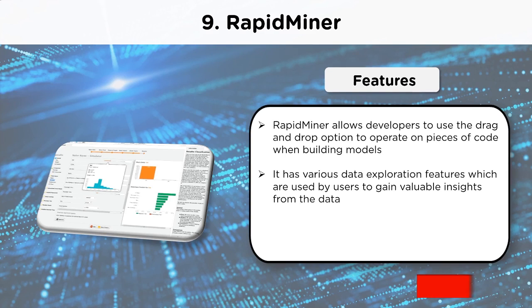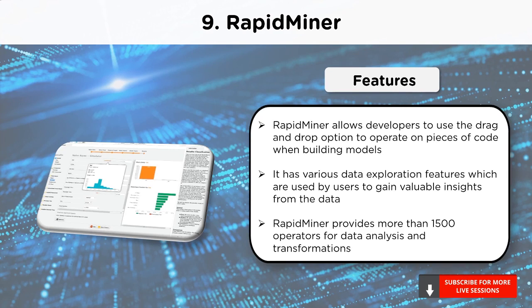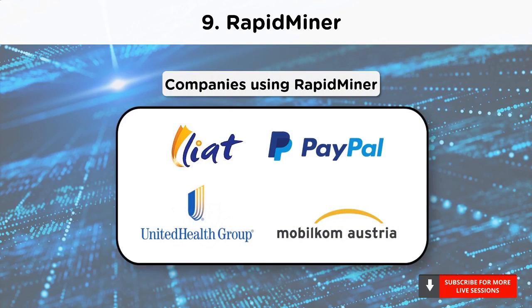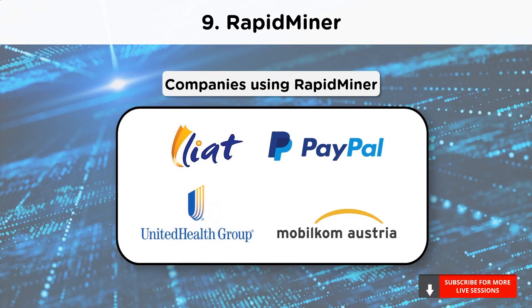It has data exploration features such as graphs, descriptive statistics and visualization which allows users to get valuable insights. It also has more than 1500 operators for every data transformation and analysis task. The companies using RapidMiner include the Caribbean airline Leeward Islands Air Transport, United Health Group, the American online payment company PayPal, and the Austrian telecom company Mobilecom.